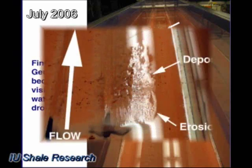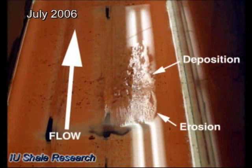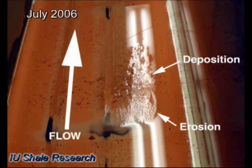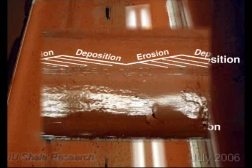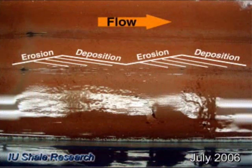At the end of a flume run, the ripple crash emerges as we slowly drain the water. In several experiments, we injected hematite dust to produce internal time markers.